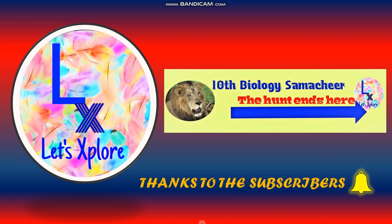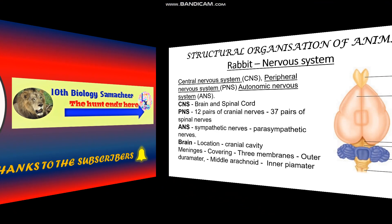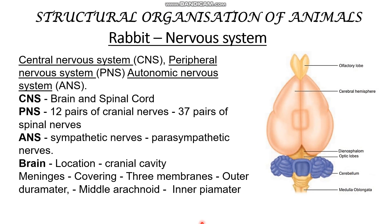Welcome to Let's Explore. Today we are going to explore the topic of Rabbit's Nervous System. The rabbit's nervous system includes the Central Nervous System (CNS), Peripheral Nervous System (PNS), and Autonomic Nervous System (ANS).